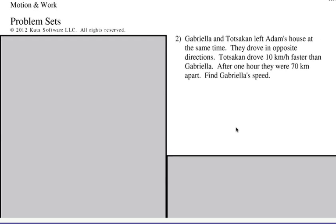Let's look at number two. I'll give you some time to work this out yourself and then show you how to do it. Gabriela and Tokasan left Adam's house at the same time. They drove in opposite directions. Tokasan drove 10 kilometers per hour faster than Gabriela. After one hour, they were 70 kilometers apart. Find Gabriela's speed. Pause this video, give it a try, draw a diagram, and come on back.